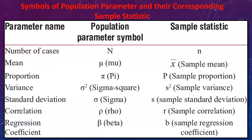Here are the symbols of population parameters and corresponding sample statistics. The mean of the population is called mu, whereas the mean of a sample is called x-bar or sample mean. Likewise, variance is sigma squared in the case of population and S squared in the case of sample statistics.